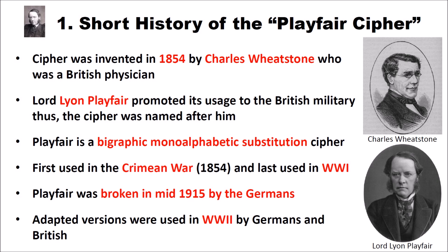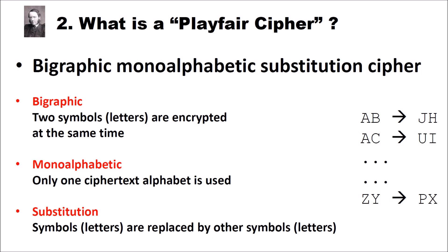What is the Playfair cipher? The Playfair cipher is a bigraphic monoalphabetic substitution cipher. Bigraphic means that two letters are encrypted at the same time. As you see here on the right, AB is encrypted to JH, AC to UI, and ZY is encrypted to PX.